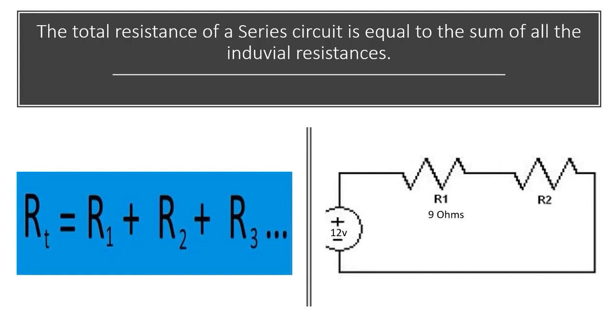In this case, R1 is 9 ohms. R2 is 4 ohms. So RT is going to be 13 ohms.